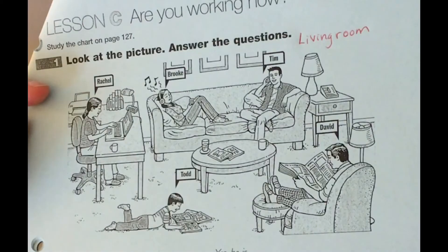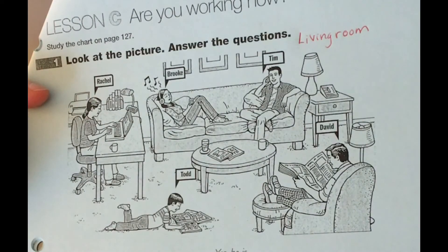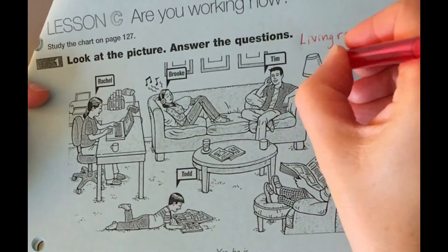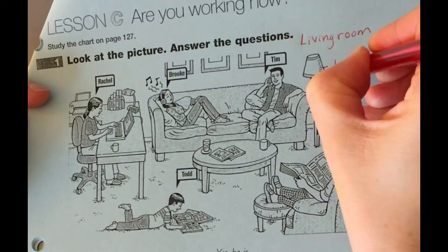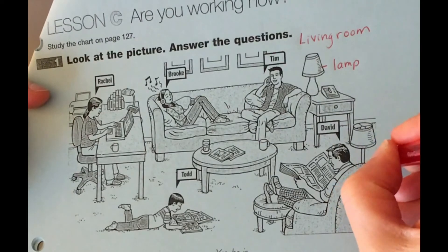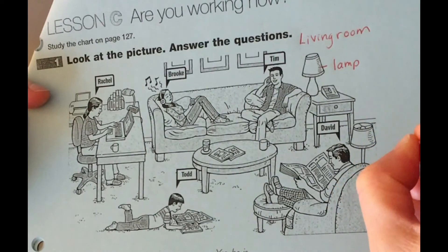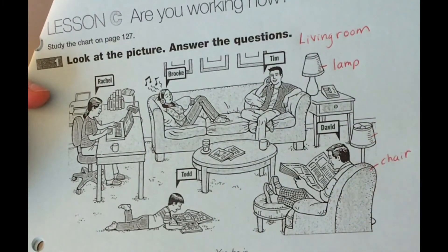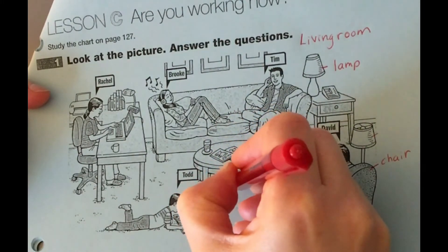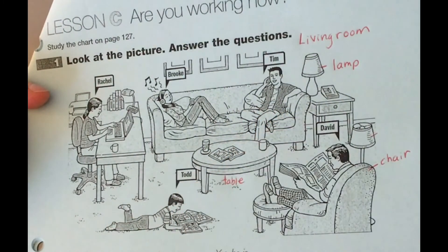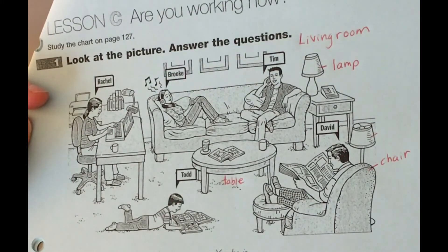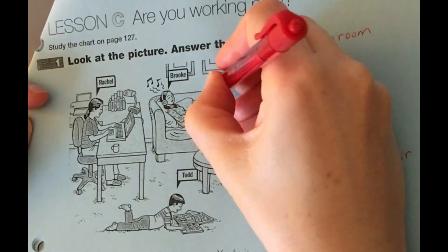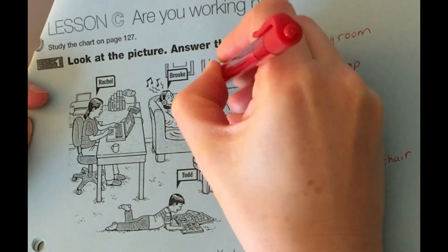And students, can you label the lamp? L-A-M-P. We have a lamp, we have a chair, we have another lamp, we have a table. This is called labeling — when we write the name, we spell the words. And here we have a sofa or couch.